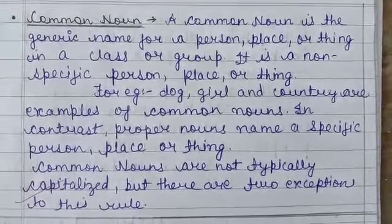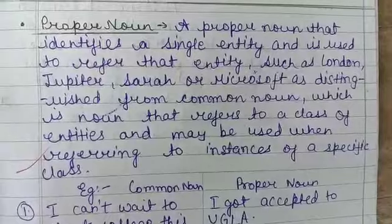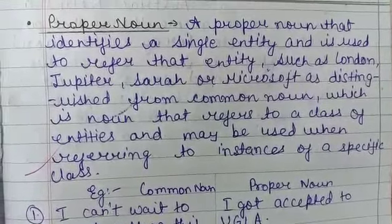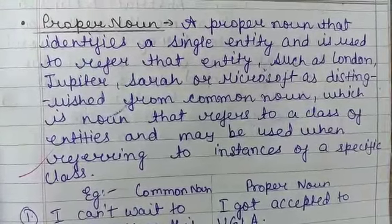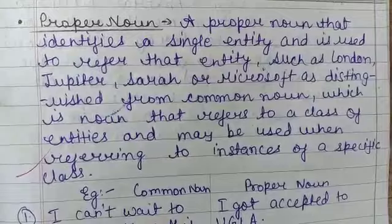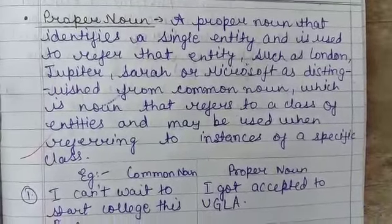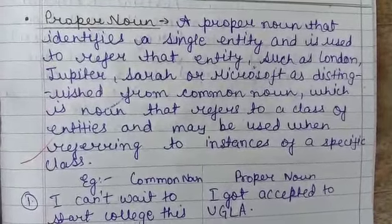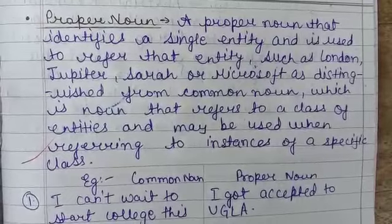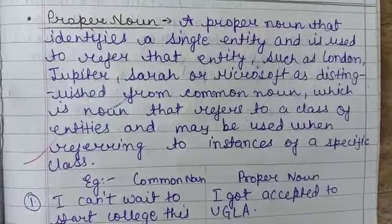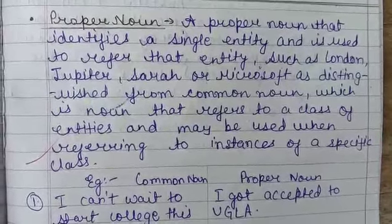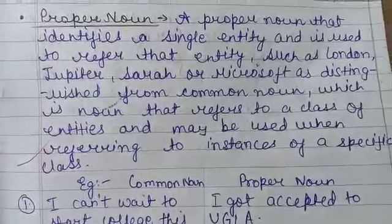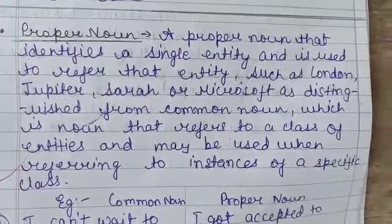Now we are going to understand about the proper noun. The difference between common noun and proper noun is most important for the examination. A proper noun identifies a single entity and is used to refer to that entity, such as London, Jupiter, Sara, or Microsoft, as distinguished from a common noun.